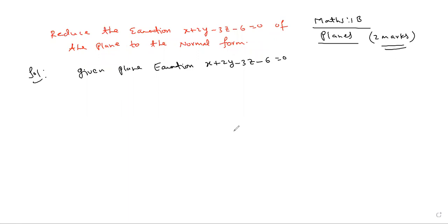First step: write the constant to the right-hand side, then divide by the square root of the sum of coefficient squares. So we calculate: √(1² + 2² + (-3)²) = √(1 + 4 + 9) = √14.